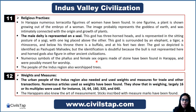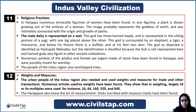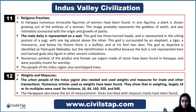We must also remember that male and female sex organs were worshipped during the time of the Harappans, and people of the Indus region also worshipped trees. Regarding weights and measures, Harappan civilization also used standardized weights. In weighing, the unit of 16 and its multiples were largely used. Sticks were also inscribed with measurement marks and used as measuring instruments.